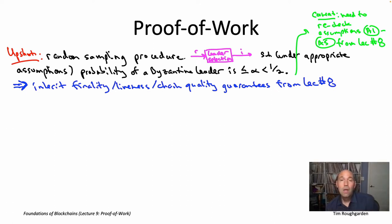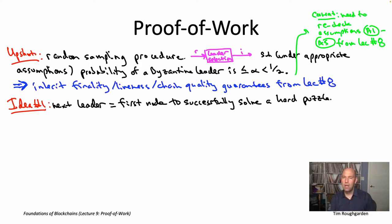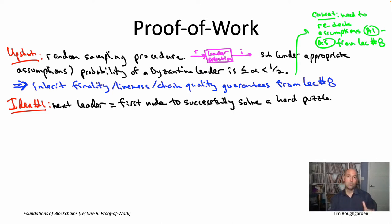So proof of work — what is it? The main idea is to declare the next leader to be the first node that manages to come up with a solution to a hard puzzle. Looking ahead to Sybil resistance: we want puzzles where having multiple IDs just doesn't help you at all. All that matters is computational power — it doesn't really matter how many public-private key pairs you've generated. The next leader is not actually being explicitly computed by the protocol. It's bottom-up: nodes must convince the protocol and all other nodes that they are the leader by exhibiting a solution to the hard puzzle.